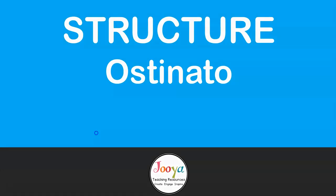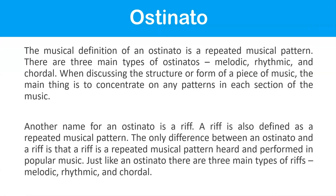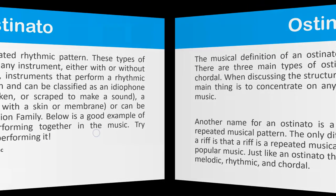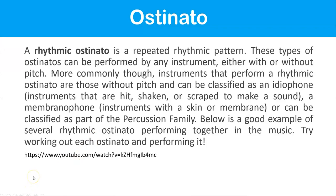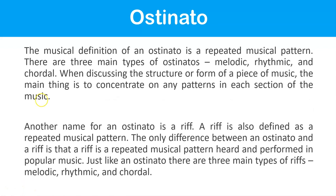The musical definition of an ostinato is a repeated musical pattern. There are three main types: melodic, rhythmic, and chordal. Another name for an ostinato is a riff — the only difference is that a riff is a repeated musical pattern heard in popular music. Just like an ostinato, there are three main types of riffs: melodic, rhythmic, and chordal.